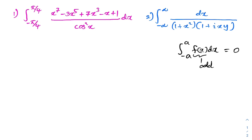Let's solve the first integral. We can write this integral by taking the numerator as two parts. The first part I am going to take is this expression, and as a second part I am going to take one. Now we can divide by cosine squared of x.